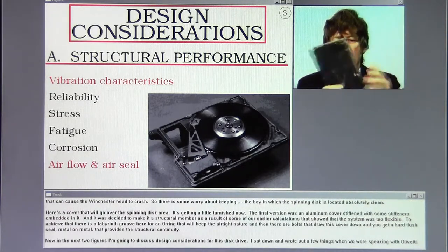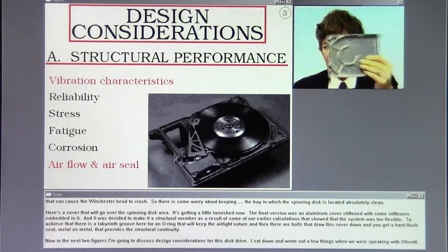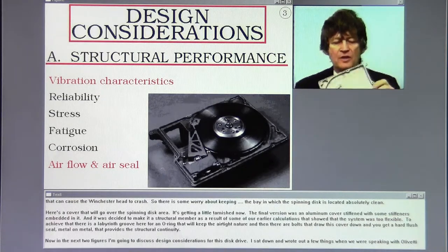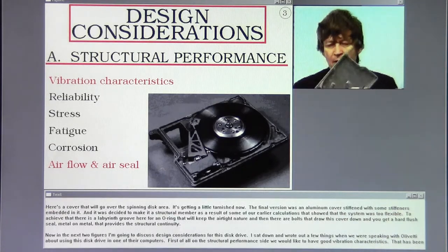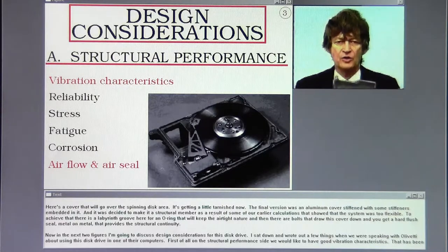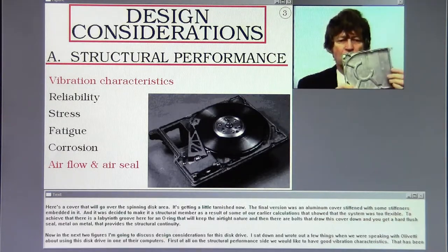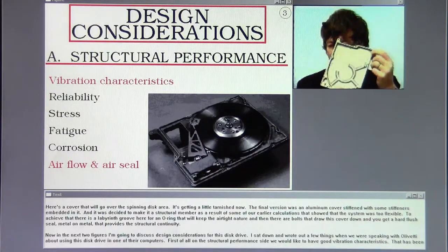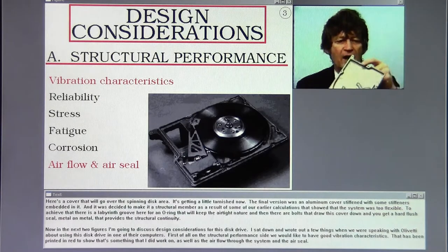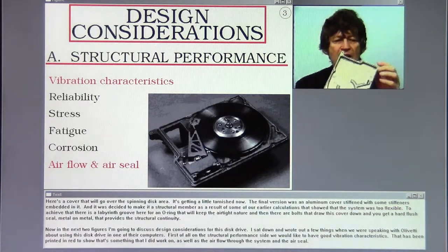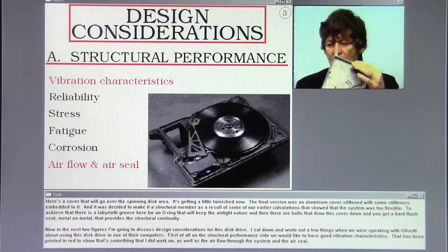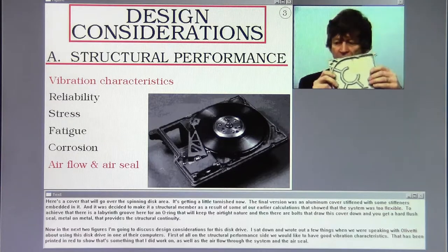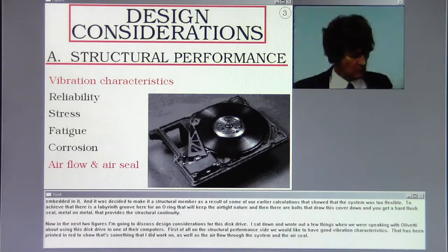The Winchester heads are not mounted on here. They were spring-loaded and would read both the top and the bottom side of the disk at the same time. The hole that you see here was filled with quite a large air filter. The Winchester head rides something like 12 microns over the surface of the disk, and a smoke particle can be as high as 15 microns bumping up from the disk if stuck there. That can cause the Winchester head to crash. So there is some worry about keeping the bay absolutely clean. Here's a cover that will go over the spinning disk area. The final version was an aluminum cover stiffened with some stiffeners embedded in it, made a structural member as a result of our earlier calculations.